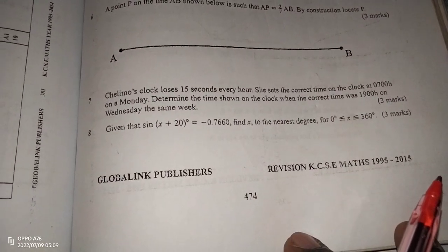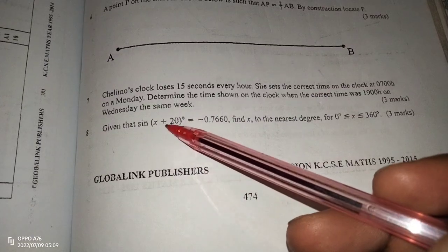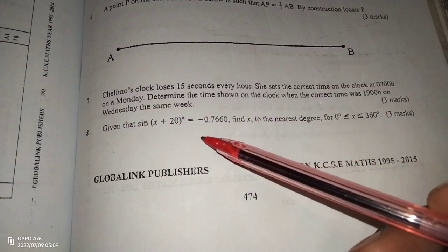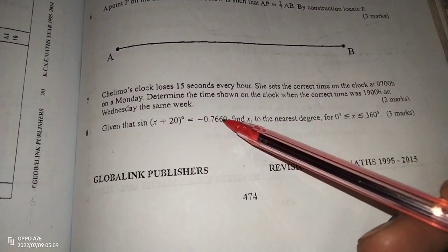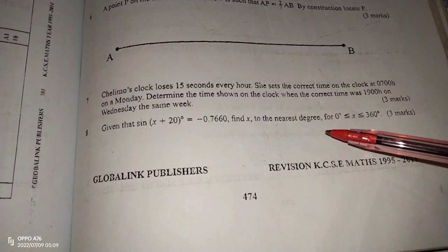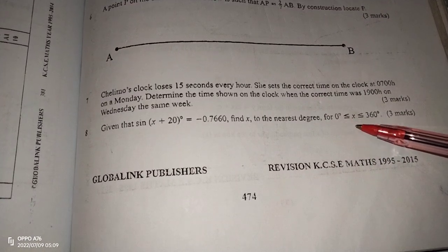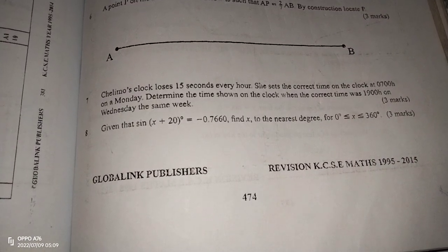So we have a trigonometric equation here. Given that the sine of x plus 20 degrees equals negative 0.7660, find x to the nearest degree for x ranging between 0 and 360.